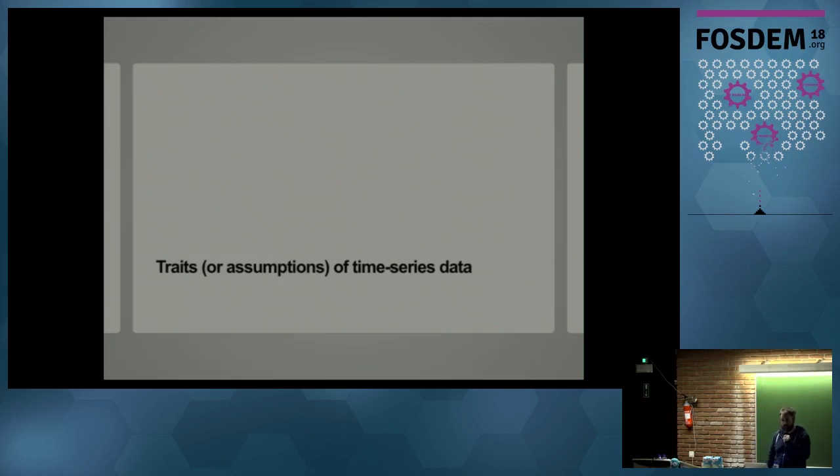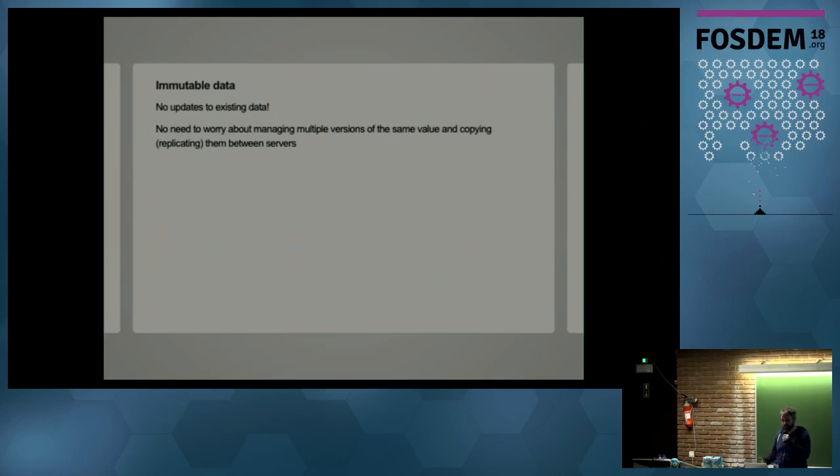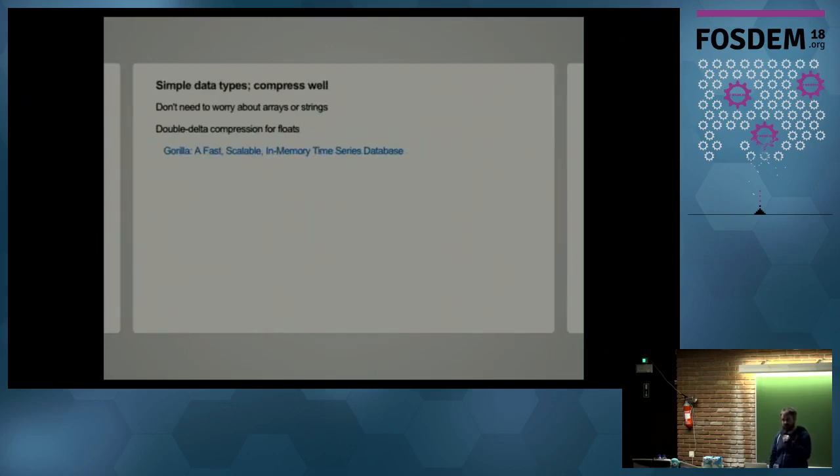So to try and understand the problem more, let's consider some of the traits or assumptions we can make about time series data. So the first one I made was the data once ingested will be immutable. So basically the data would be append only. So there would be no need to worry about updates to the data. So we don't have to worry about updating a row essentially in a relational database or managing multiple versions of the same data. So that helps relax some of the requirements. And so the other thing about metrics is the data types can be really simple. So time series can include events. But in this case, I was just focused on numbers. And numbers can compress really well. Prometheus 2.0 and above uses a variant of the Gorilla compression algorithm from Facebook. And this uses double delta compression for 64-bit floats. So it takes the difference between the two numbers and then it takes the difference between that difference and it uses that to compress the data. And if you're interested, the Gorilla paper explains how that works.